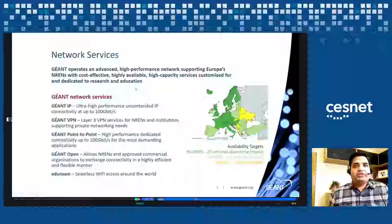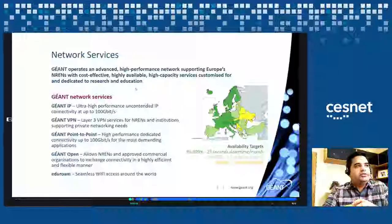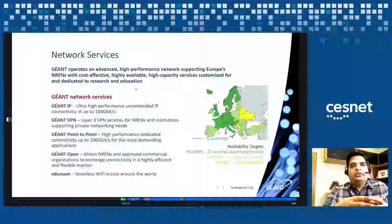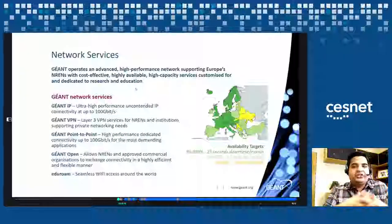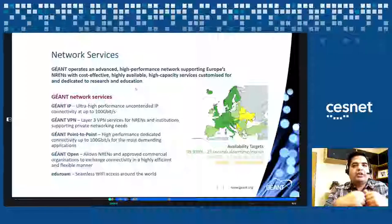Quickly covering the network services: JN IP is the high-performance uncontended IP connectivity at up to 100 gigabits per second. Several NRENs are now connected at 2×100 gigabits per second. We also provide JN VPN service — layer 2 and layer 3 VPN services to NRENs and big science users. CERN's LHC is one of the big users for the layer 3 VPN service, which we call LHC1. We also have a JN point-to-point service, which is high-performance dedicated connectivity up to 100 gigabits per second across Europe. And we have JN Open Exchange, which allows NRENs and approved commercial organizations to exchange connectivity efficiently.